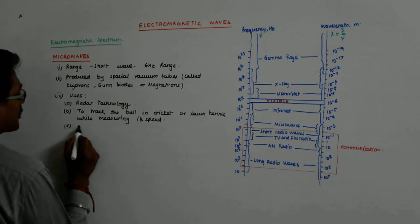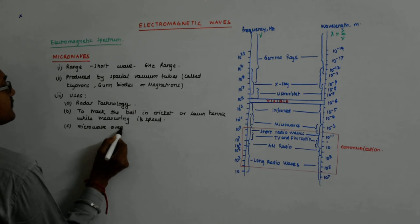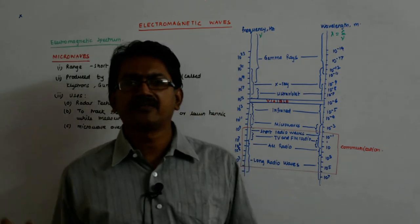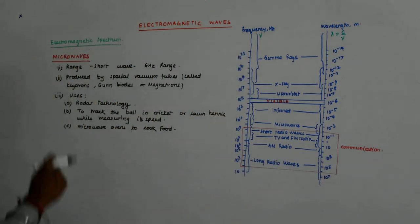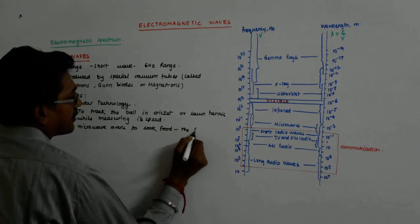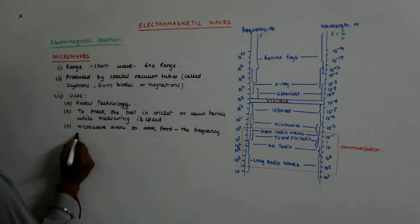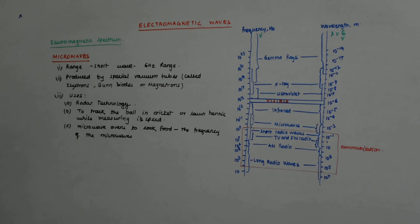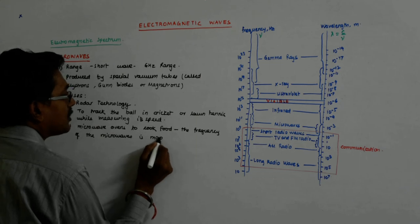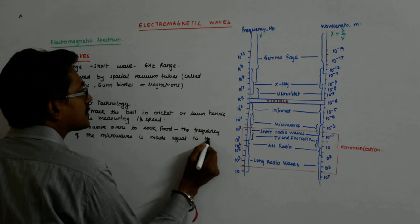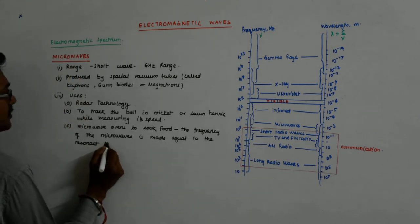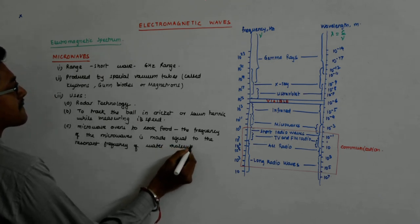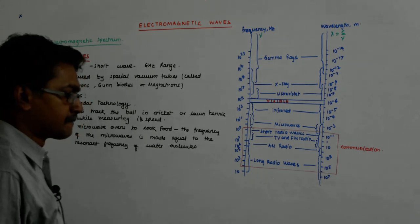Then in the famous microwave ovens to cook food, what happens? The frequency of the wave is matched with the resonant frequency of water molecules. The frequency of the microwave is made equal to the resonant frequency of water molecules.